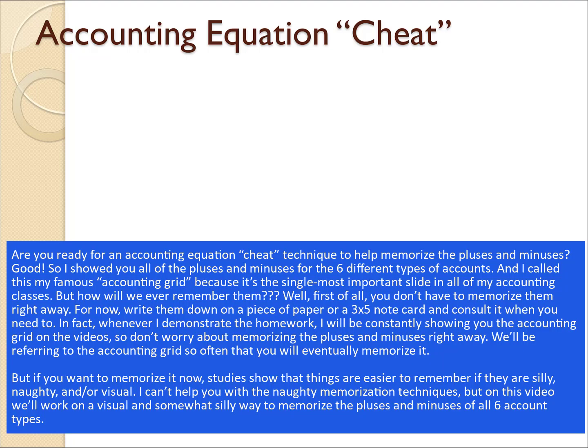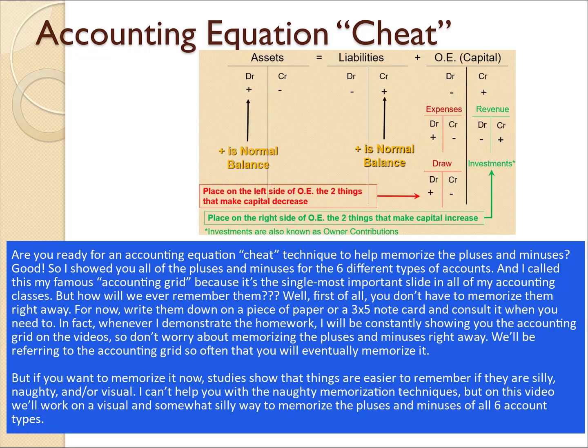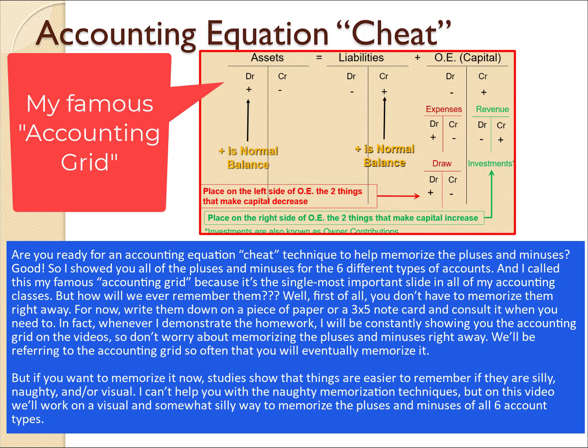Are you ready for an accounting equation cheat technique to help memorize the pluses and minuses? I showed you all the pluses and minuses for the six different types of accounts — I call this my famous accounting grid. You don't have to memorize them right away. Write them down on a piece of paper or a three-by-five note card and consult it when you need to. We'll be referring to the accounting grid so often that you will eventually memorize it. Studies show that things are easier to remember if they are silly and visual, so we'll work on a visual and somewhat silly way to memorize the pluses and minuses of all six account types.